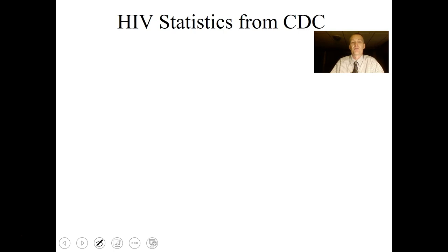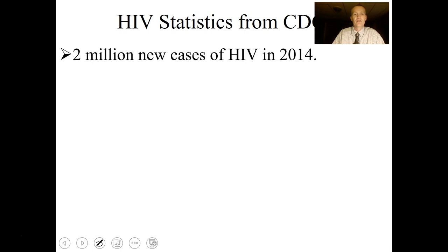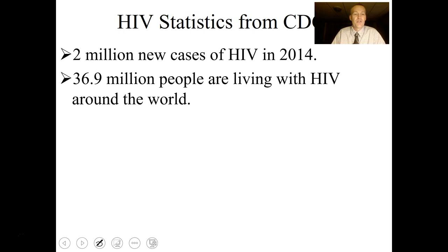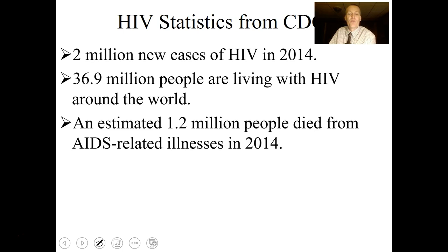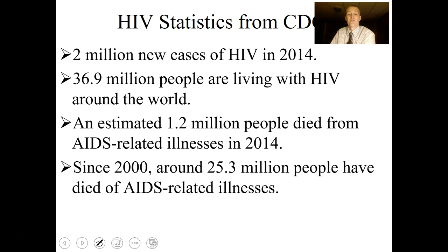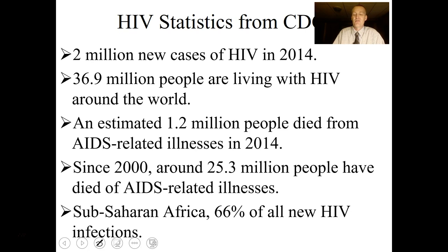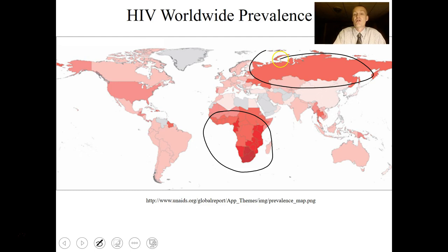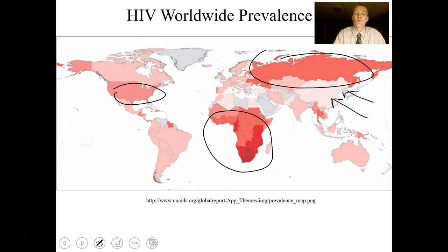A few HIV statistics: there were 2 million new cases of HIV in 2014; 36.9 million people are living with HIV worldwide; an estimated 1.2 million people died from AIDS-related illnesses in 2014; and since 2000, around 25.3 million people have died from AIDS-related illness. 66% of all new HIV cases are in sub-Saharan Africa, which is particularly devastated. Russia and the United States also have high numbers, and some regions like North Korea and China under-report.